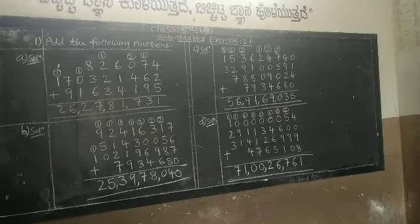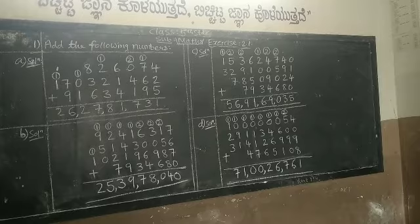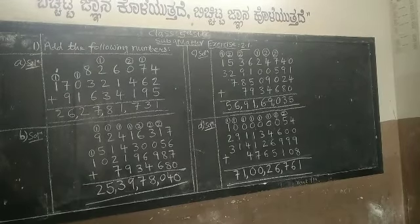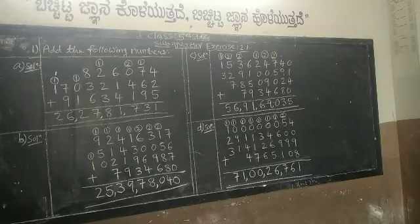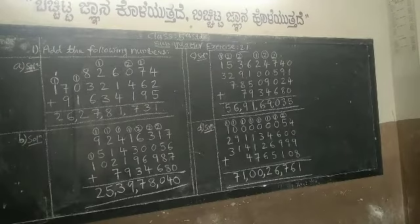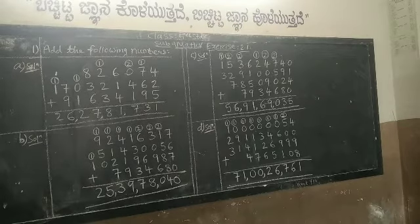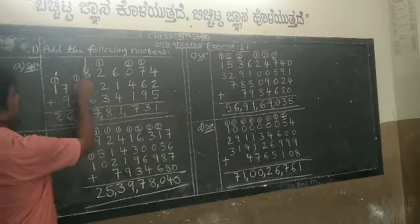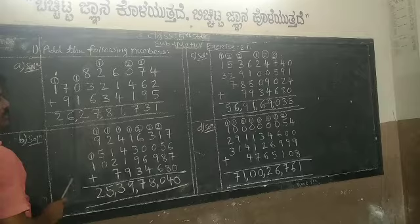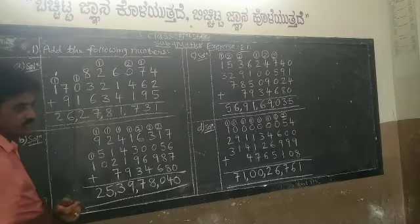Hello, dear students. Fifth standard math — we are doing the second chapter, Exercise 2.1. In Exercise 2.1, the first main question is 'Add the following numbers.' In fourth standard you have learnt about addition; the same continues here in fifth standard also. So, add the following numbers — this is the first main question in Exercise 2.1.